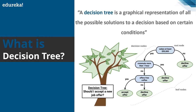Here's another example: should I accept a new job offer? The root node checks if the base salary is at least $50,000. If not, reject the offer. If yes, check if the commute is more than one hour — if so, decline. If the commute is under an hour, then check if the company offers free coffee. If not, decline; if yes, accept the offer. This illustrates how decision trees work in practice.